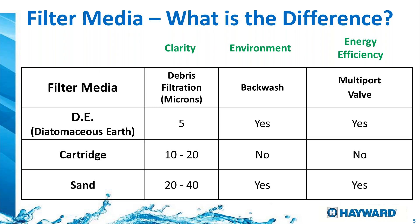For clarity on the debris each filter can hold: DE filters filter down to around 5 microns. The smaller the number, the greater the water quality, because the filter catches smaller debris from the swimming pool. Cartridge filters have a debris retention of about 10 to 20 microns, and sand is 20 to 40 microns. DE and sand require a backwash; cartridge does not. Both DE and sand require multiple valves, and cartridge does not.